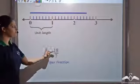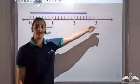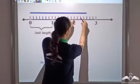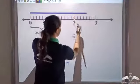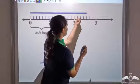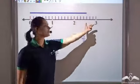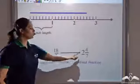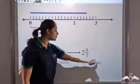Now let's look at where eighteen by seven is positioned on the number line. This blue line is eighteen by seven. It spans two units and then one, two, three, four — four of these seven divisions. So I can say it is two whole units plus four by seven. So I can write eighteen by seven as two and four by seven.